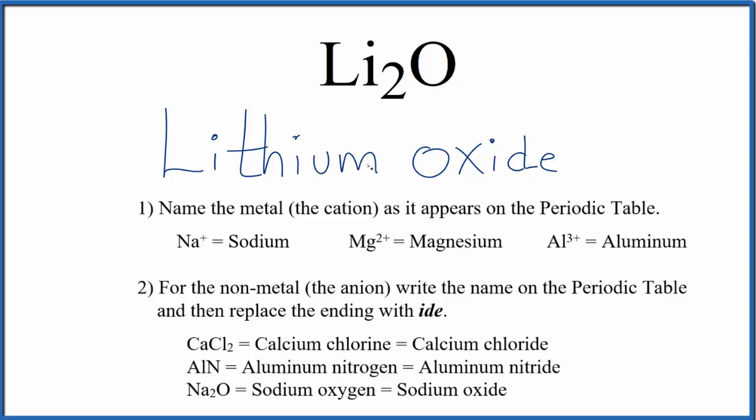If you were given the name lithium oxide and asked to write the formula, you'd need to know that lithium's in group one on the periodic table, it forms ions that are one plus. Oxide from oxygen will form ions that are two minus.